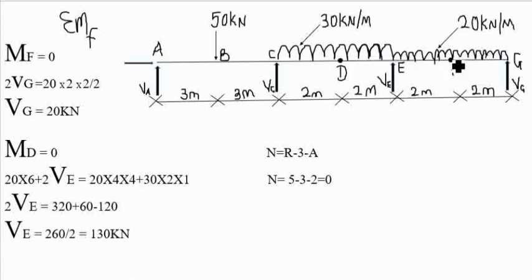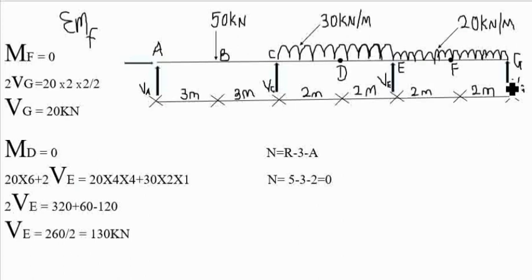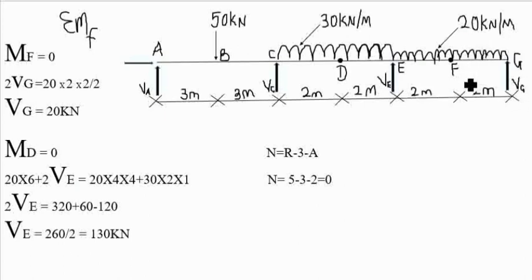If we take moment at point F — so M of F equals zero — we are only considering forces to the right of point F, which is only the UDL and the vertical force Vg. The distance of Vg from point F is 2 meters, so we have 2·Vg. The 2·Vg term moves in a clockwise direction.